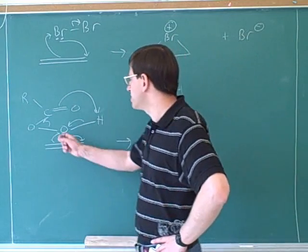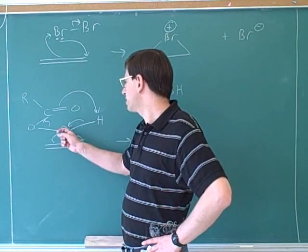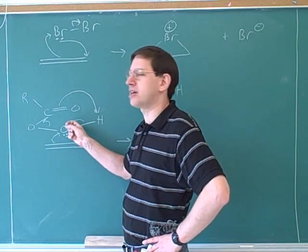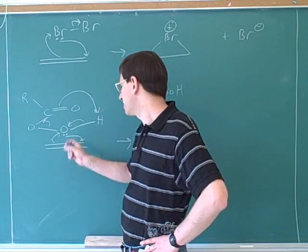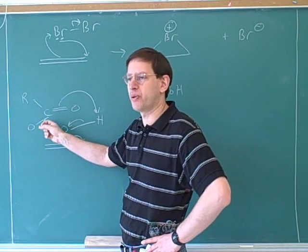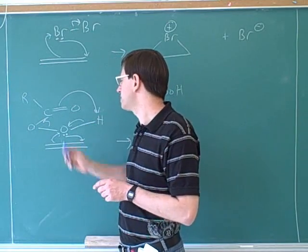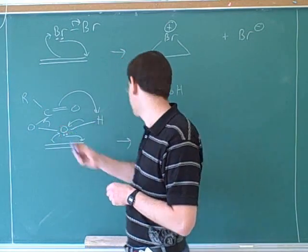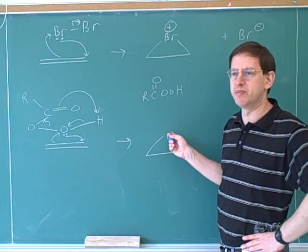Is there going to be any charge on this oxygen? Well, notice that there are two arrows pointing towards this oxygen. This arrow is pointing towards the oxygen and this arrow is pointing towards the oxygen. And there's also two arrows pointing away from the oxygen. This is pointing away from the oxygen and this is pointing away from the oxygen. Two arrows pointing towards and two arrows pointing away means the charge shouldn't change. Since it started neutral, it's going to end up neutral. Well, that's good because epoxides are supposed to be neutral.